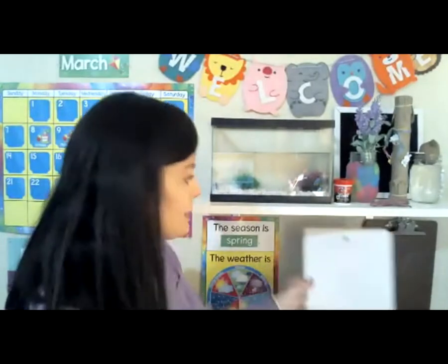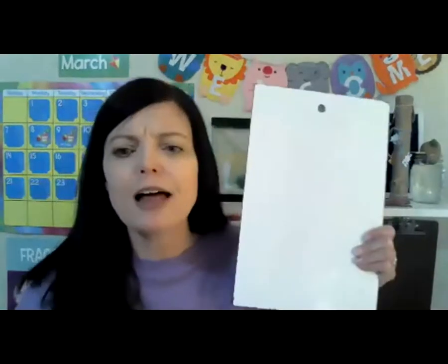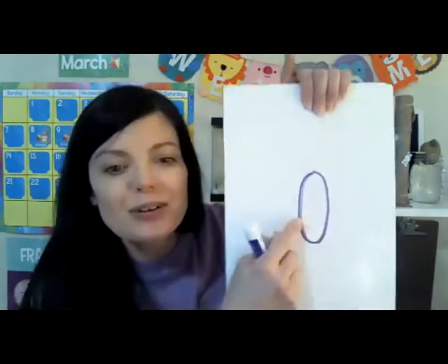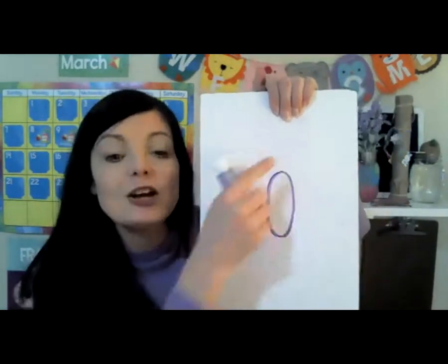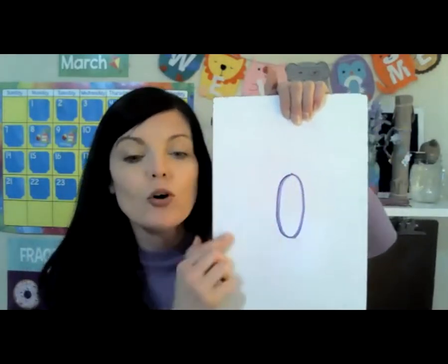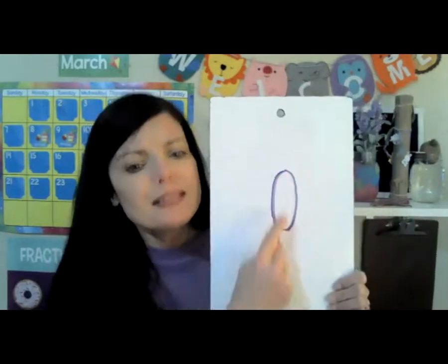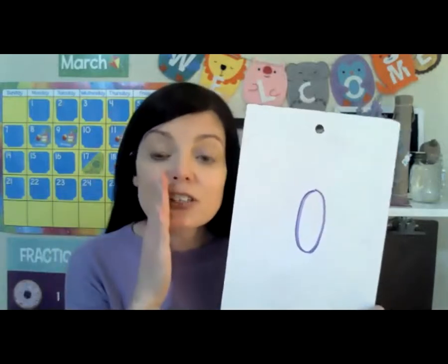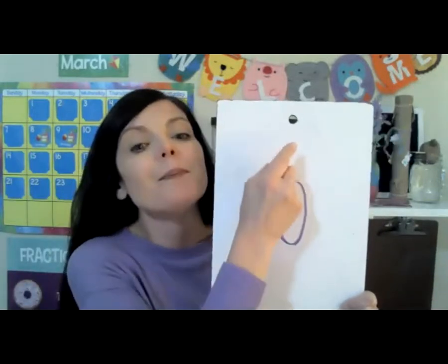Wow, you did a great job adding butterflies. Now I want to show you how you can draw a butterfly. For our shape practice today, we're going to be making a shape butterfly. To start with, I'm going to draw this shape — I want you to tell me what it is. What shape is this? That's an oval. The oval is going to be up and down — we call that vertical. Can you say vertical? Vertical is up and down.